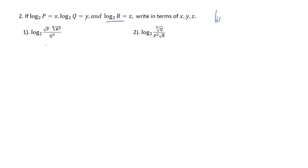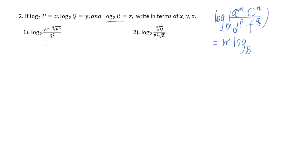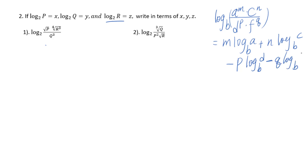If we have log base b of (a to the m power times c to the n power) over (d to the p power times f to the q power), how do we expand this log? We get m·log_b(a) plus n·log_b(c), then minus p·log_b(d) minus q·log_b(f).